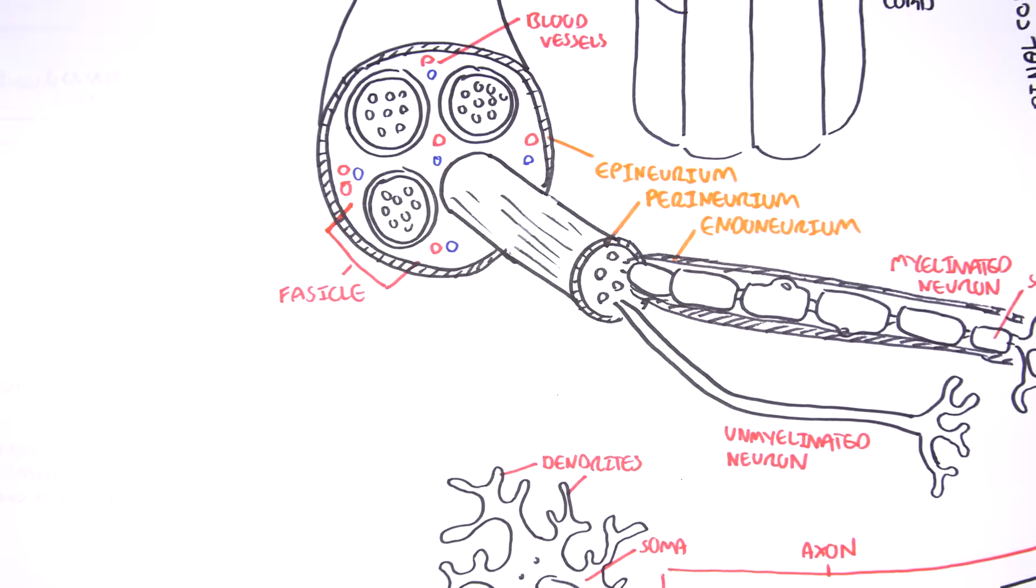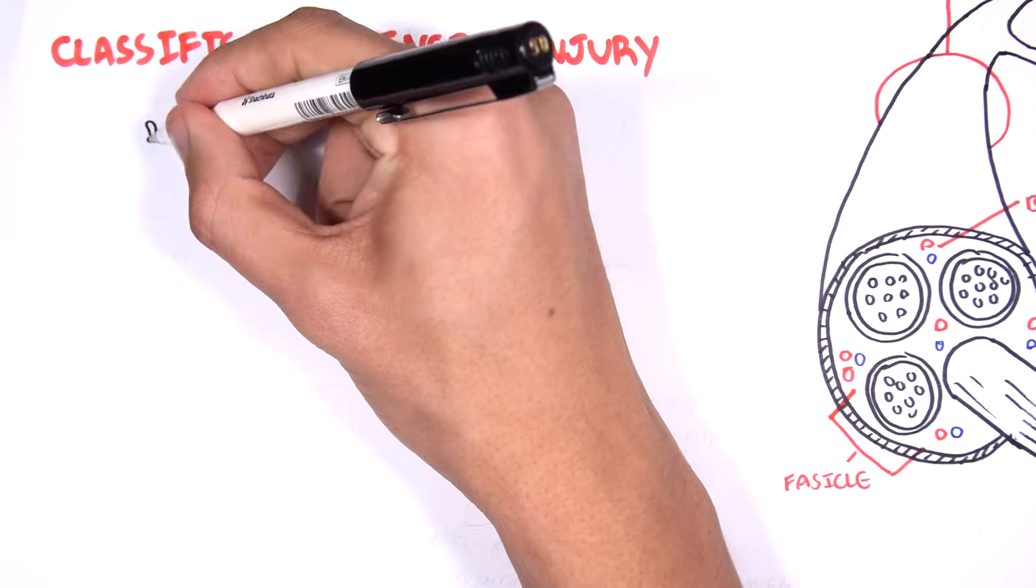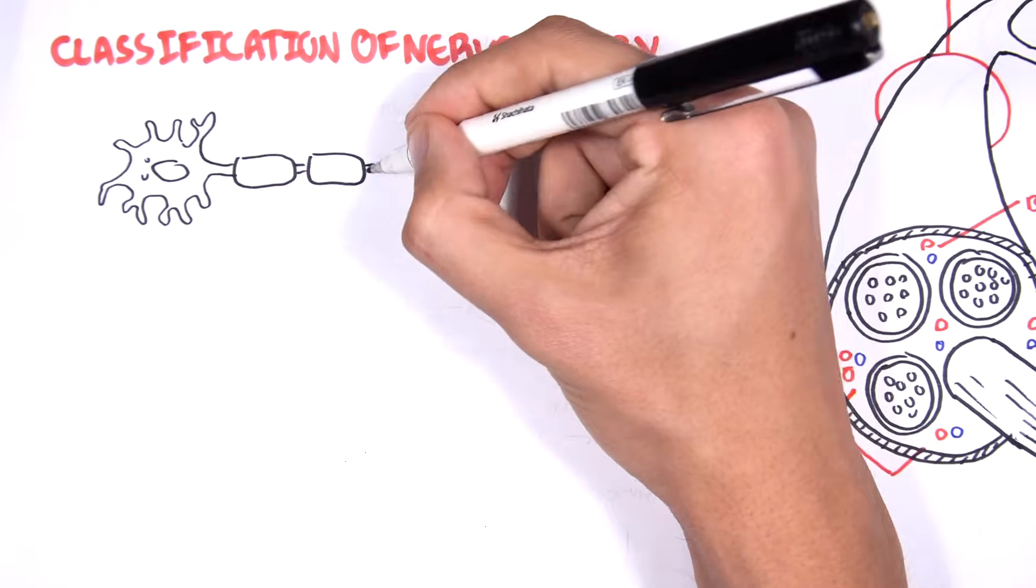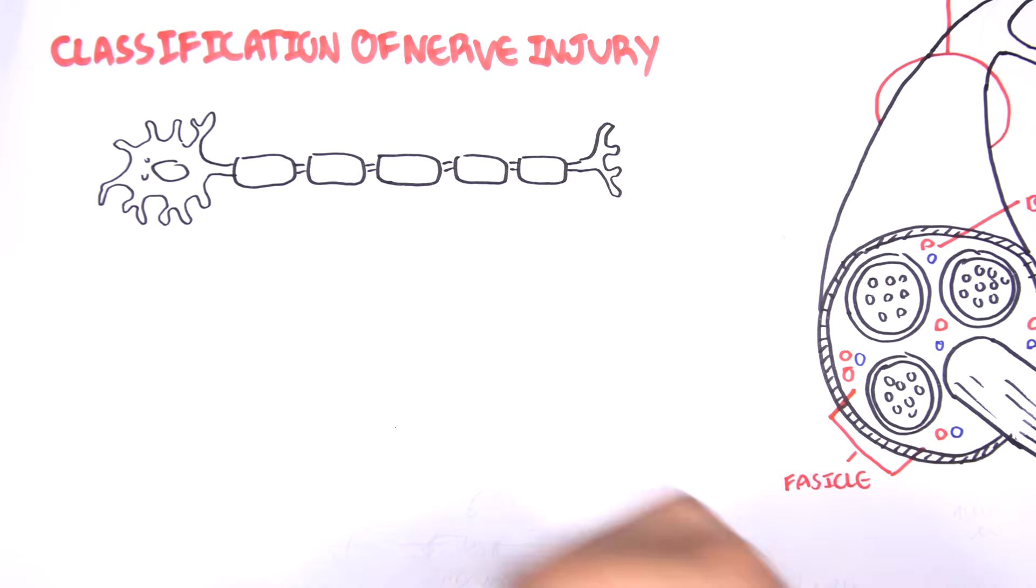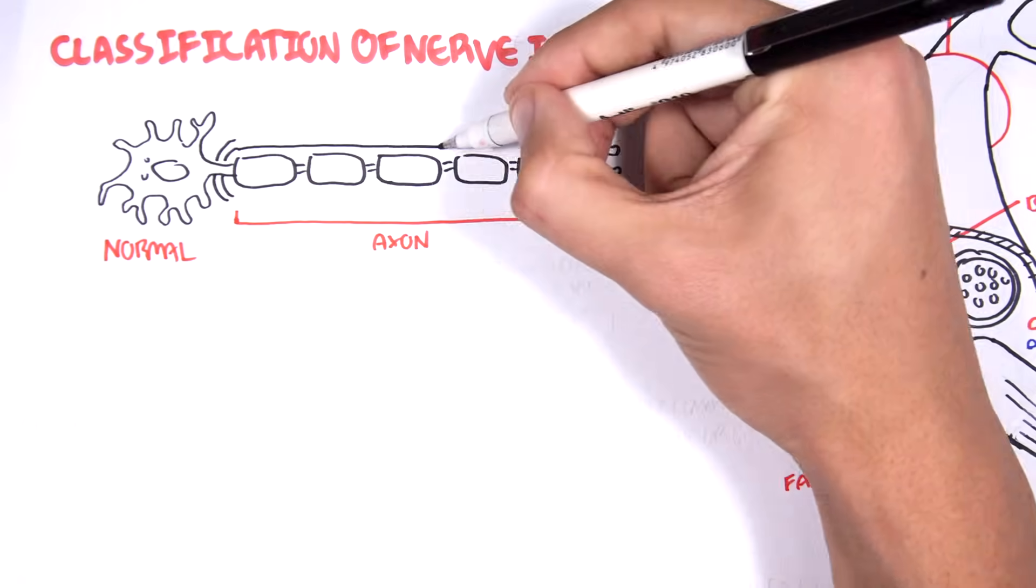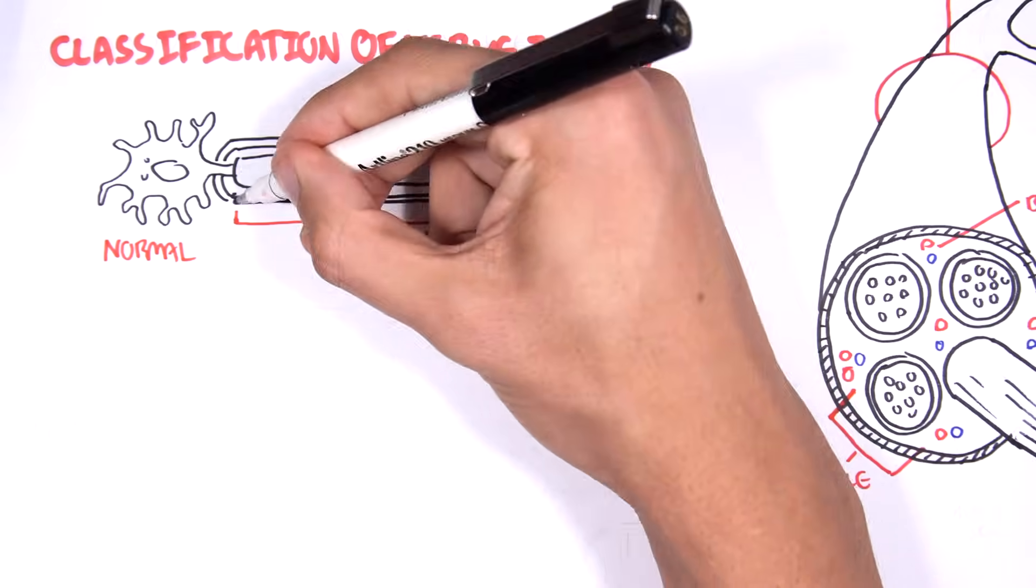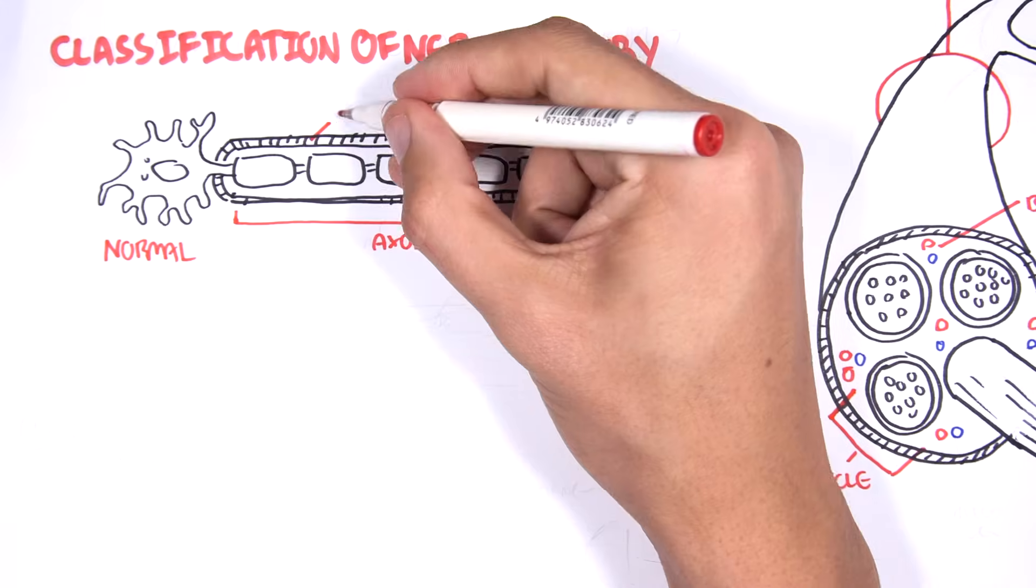Now, on to looking at the classifications of nerve injuries. Well, you have three main types. Before looking at the three main types of nerve injuries, we should recap a normal neuron here. So, remember, it has an axon, and it has an endoneurium sheath surrounding it. So, this is normal.